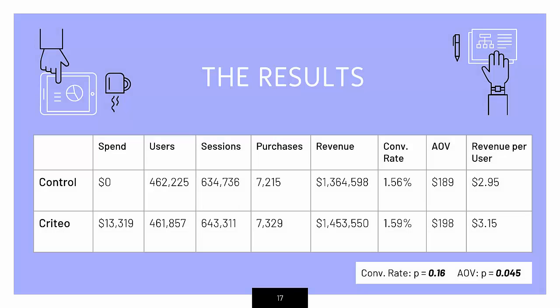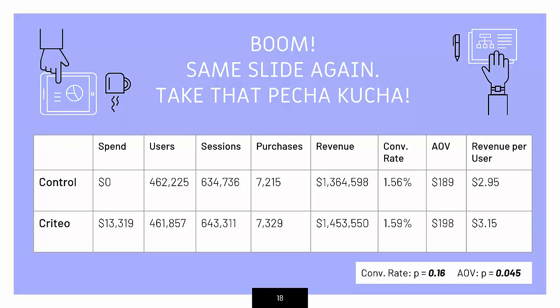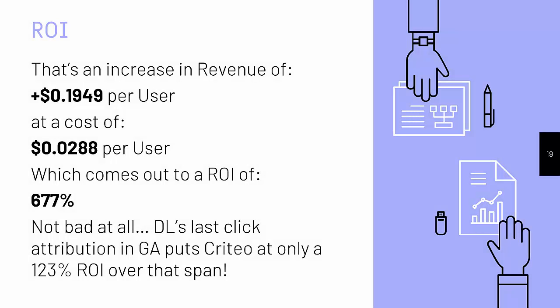Over these six months, we spent about $13,000 on Criteo retargeting. Sessions were higher — that's kind of what you're going for with retargeting. Purchases were higher. Conversion rate went up a little bit. AOV actually went up, which was super surprising. In fact, the AOV rise was more statistically significant than the conversion rate increase, which was very surprising. But altogether, an increase of about $90,000 for about $13,000 in spend. On a per-user level, about $0.19 per user higher in the Criteo group, and about $0.03 more per user in spend, which came out to an ROI of about 677%, which is not bad at all. DL's last-click attribution in GA had Criteo over that time at about 123% ROI, which is pretty terrible. So that's a pretty big challenge to what you would have thought looking at traditional attribution models.